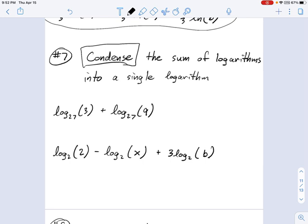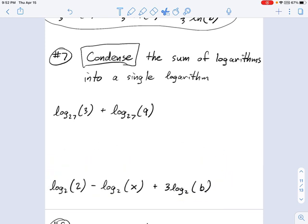So I've got log base 27 of 3 plus log base 27 of 9, and I want to say what is that equal to. So we just use the product rule, and we say this is equal to the logarithm, same base, base 27, and because I'm adding these two logarithms together, that's the product rule, where this becomes 3 times 9 on the inside of the parentheses. And if you need to convince yourself of that, just try to go backwards. Split up 3 times 9 using the product rule to expand it out to log of 3 plus log of 9.